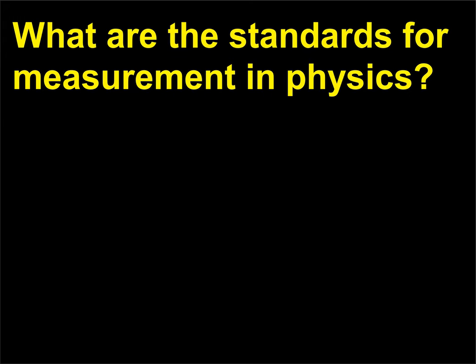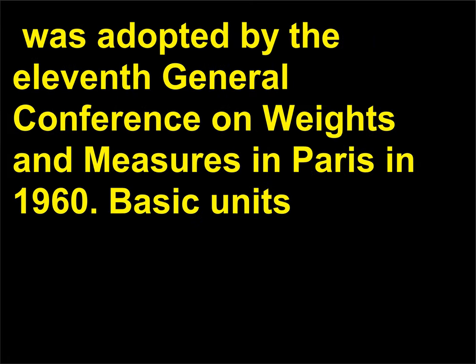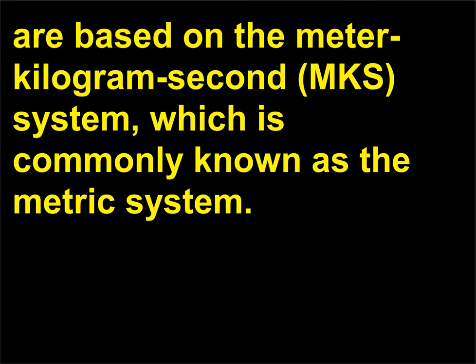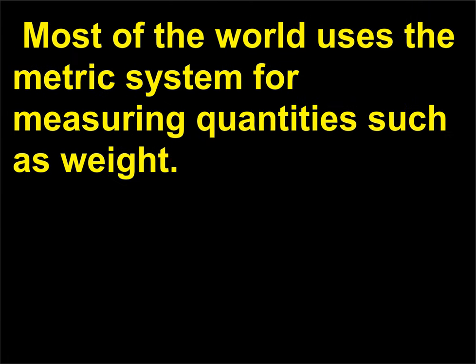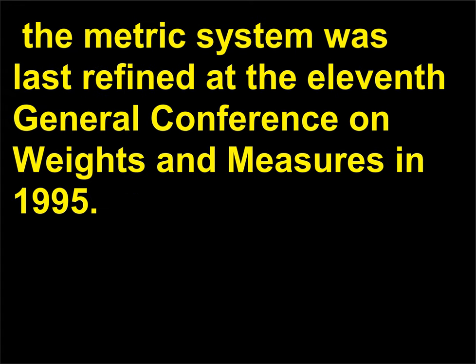What are the standards for measurement in physics? The International System of Units, officially known as Système International and abbreviated SI, was adopted by the 11th General Conference on Weights and Measures in Paris in 1960. Basic units are based on the meter-kilogram-second (MKS) system, commonly known as the metric system. Most of the world uses the metric system for measuring quantities such as weight. The metric system was last refined at the 11th General Conference on Weights and Measures in 1995.